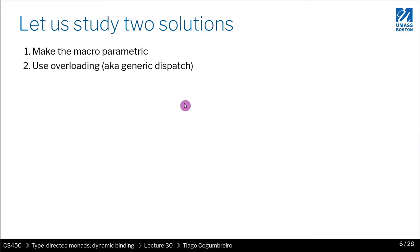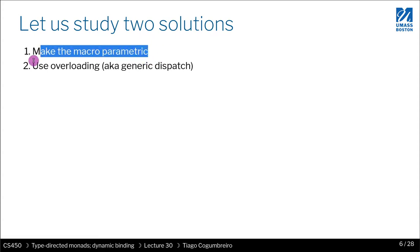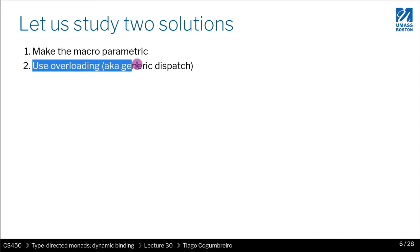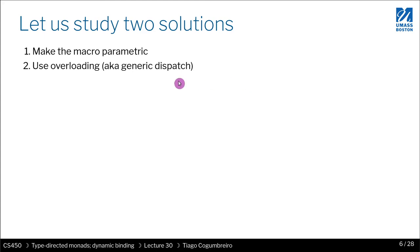So how can we avoid copy-pasting our macro with the one side effect? We're going to study two possible solutions. One, and perhaps the easiest one, is to make the macro parametric — we'll see what that means and what it entails. The second idea is to use overloading, which is really the subject of this part: generic dispatch, also known as dynamic dispatch.